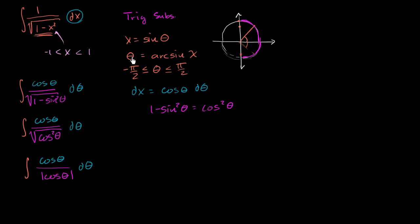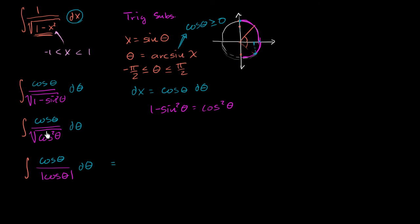Luckily, we've already constrained theta to equal arcsin of x, which means theta is between negative pi over 2 and pi over 2. In this range, we're always on the positive x-axis side of the unit circle, so cosine theta — the x-coordinate on the unit circle — is always non-negative, greater than or equal to 0. Since cosine theta is non-negative, its absolute value is just itself. So the integral simplifies to cosine theta over cosine theta d theta, which is just the integral of d theta, equal to theta plus C.